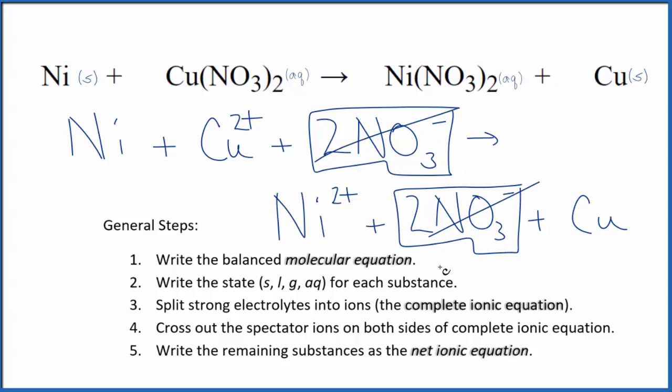But everything else is unique. So this is the net ionic equation for Ni plus Cu(NO3)2. I'll clean this up, write the states. We'll have our net ionic equation.